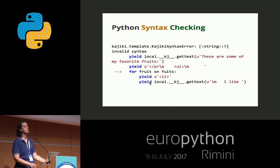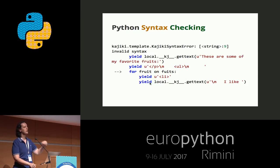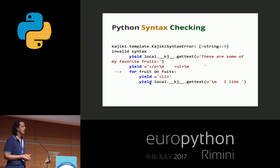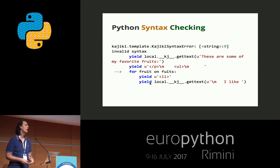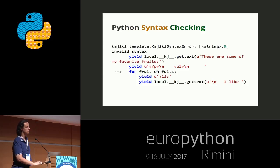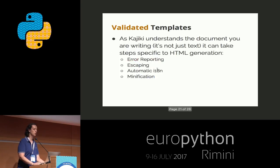Kajiki provides perfect Python syntax checking. This is something that many template engines processed at runtime do not provide. Whenever you start a Kajiki template and compile it — not when you run it, not when you are showing your page, but just when you are compiling your source code — your syntax gets checked both at the HTML level and at the Python level. For example, instead of writing py:for in I wrote py:for on, and it tells me the exact line where there is 'on' instead of 'in'. So I get Python code that gets validated.